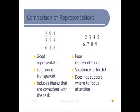If it was displayed this way, how would that have been easier? You could just select the numbers on the bottom column to remember. And the solution is transparent — if you're trying to get to 15 and it's displayed like this, you don't have to do as much cognitive work to get to the solution. The previous demonstration induces biases that are consistent with the task — so the numbers are not arranged in any way that helps you solve it. But this way it leads you down a path to select the correct numbers.